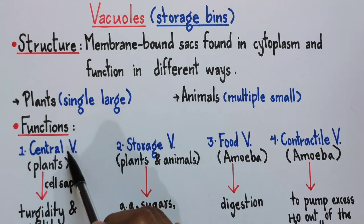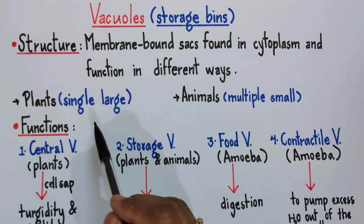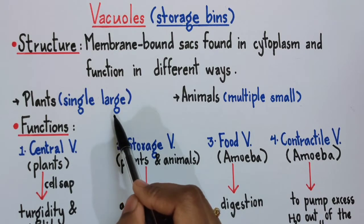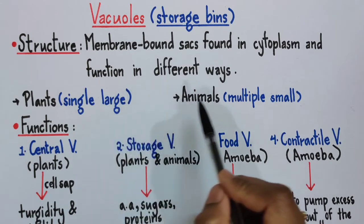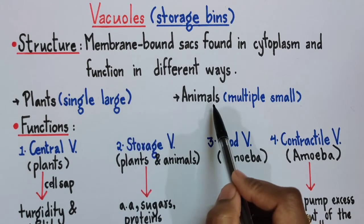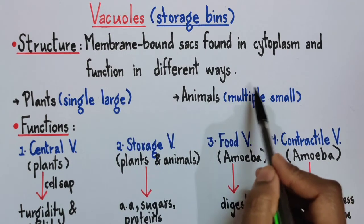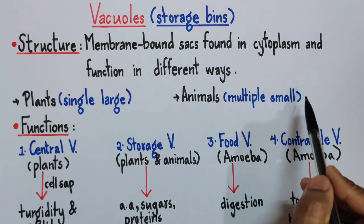This central vacuole can occupy about 60 to 70 percent of the cell volume. On the other hand, in case of animals, we see that they have multiple small vacuoles.